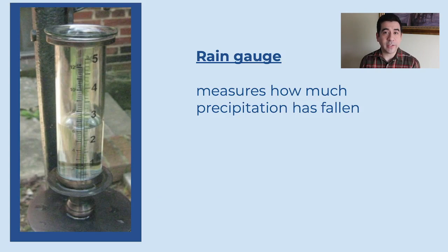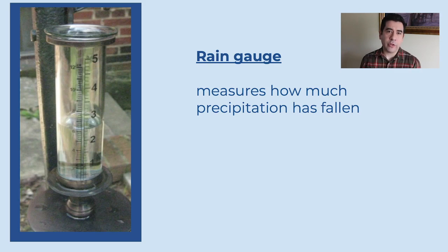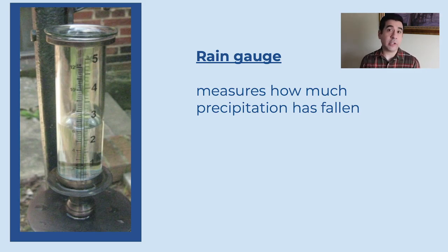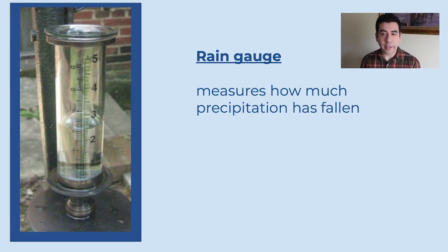Another kind of weather tool that scientists use is called the rain gauge. A rain gauge measures how much precipitation has fallen. Have you ever watched the weather on the news and they said last week it rained one inch or maybe two inches, or maybe last week there were zero inches of rain? What they use is a rain gauge — it can tell how many inches of rain, snow, or precipitation has fallen.